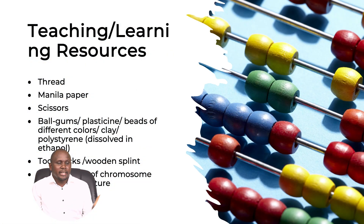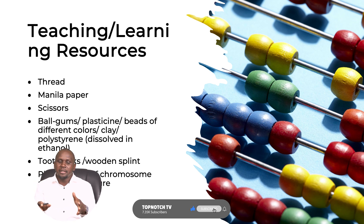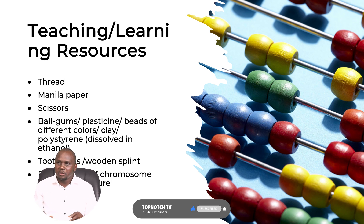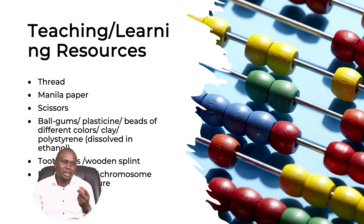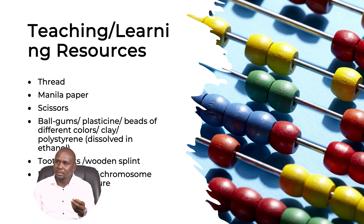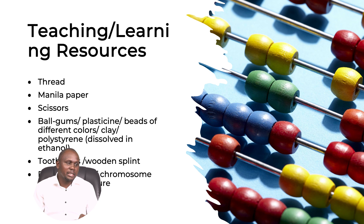One of our main outcomes is to be able to model DNA by the end of this lesson. We might not be able to model it now, but we want to discuss some materials you can use: thread, manila paper, a pair of scissors, bubblegums — you can chew them and use the balls to represent parts of the structure — or dissolve polystyrene in ethanol to make it malleable and use it to model a DNA strand. Photographs provided can also be used.